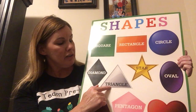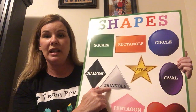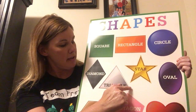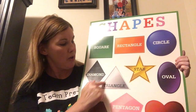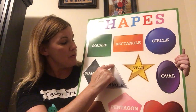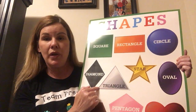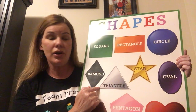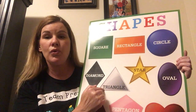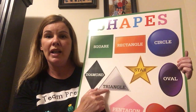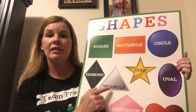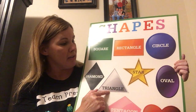Look over here at this one right next to the diamond. It has one, two, three sides. It also has one, two, three corners, and one, two, three angles. What is this shape right here? That's right, it is a triangle.